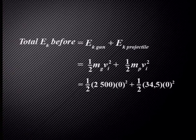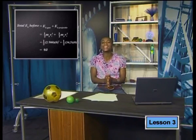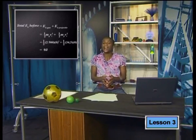Now we substitute in the values we know. Half times 2,500 times 0 squared plus half times 34.5 times 0 squared. This gives us an answer of zero. This value makes sense as the gun and the projectile aren't moving so they can't have any energy that is defined by motion.